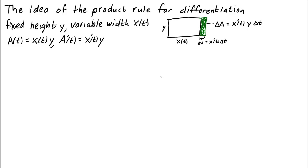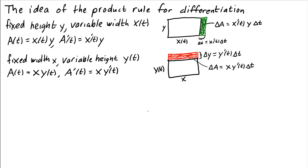In this calculation, the height of the rectangle was fixed at y, and the width was allowed to vary as a function of time, x of t. We can repeat the same calculation when the width is fixed at some number x and we allow the height to be a variable function, y of t. In this case, the derivative of the area will be equal to x times the derivative of y. In a small time interval delta t, y will have changed by y prime of t times delta t, and the change in area is illustrated by the red rectangle, where delta a equals x times y prime of t times delta t.